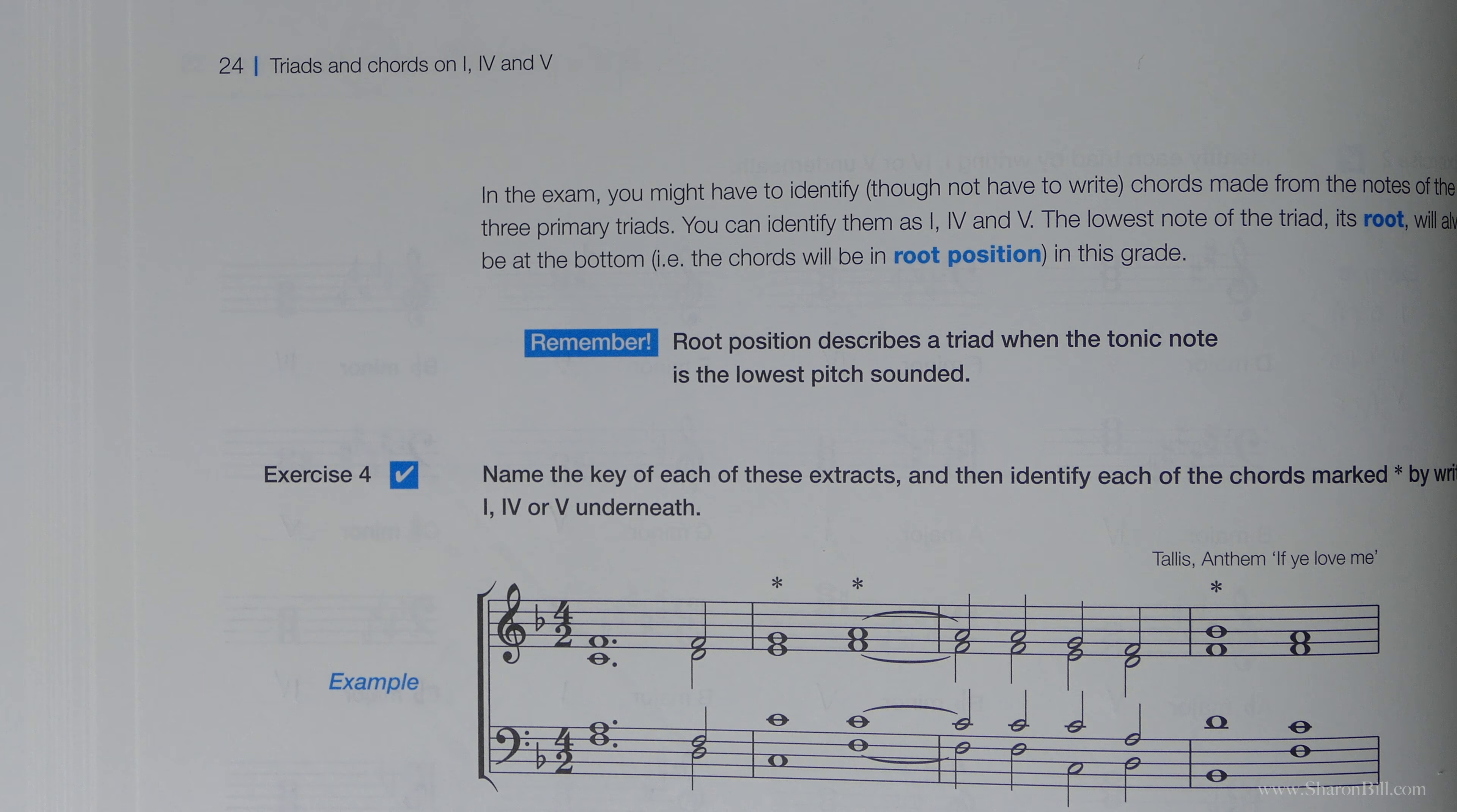And so if we build our triads on those, that went very wonky. Shall I do that again? Very wonky notes recently. Let's try again. C, E, G. 1st, 3rd, 5th. 1st, 3rd, 5th. And so let's look at what notes we've got. We've got a C, E, G. We've got an F, A, C and we've got a G, B, D.